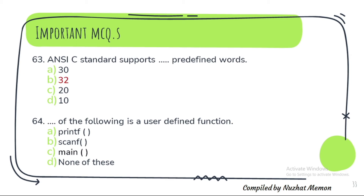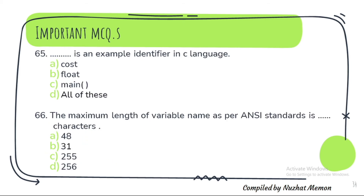Question 64: Which of the following is a user-defined function? C — main. Question 65: What is an example identifier in C language? It is all of these. Question 66: The maximum length of a variable name as per ANSI standards is 31 characters.